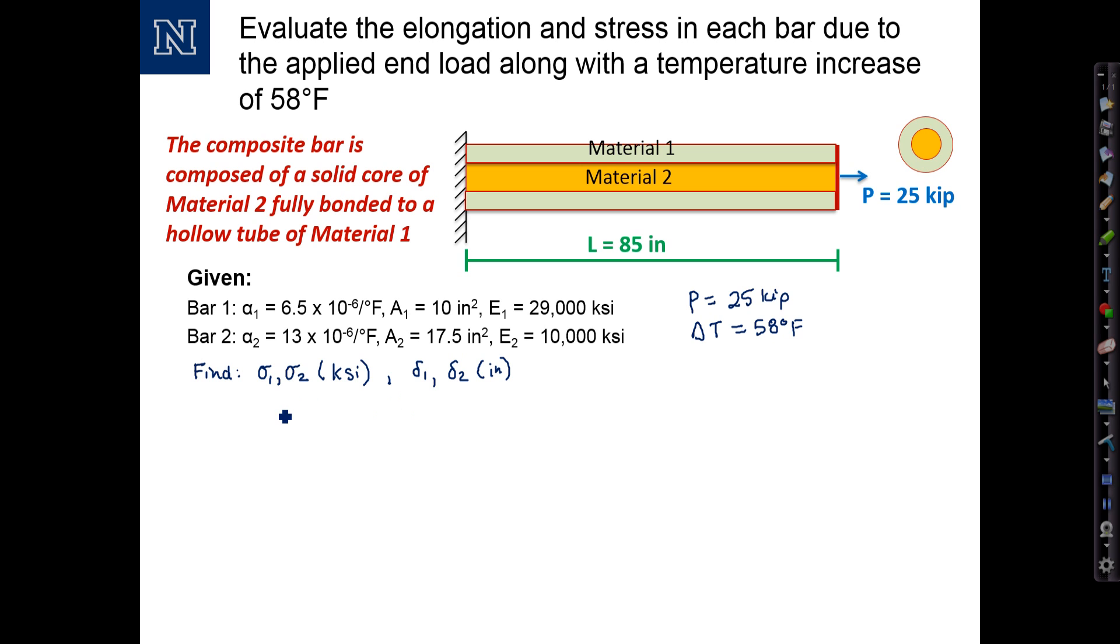We'll start out with considerations of equilibrium by drawing a free body diagram. I'm going to go ahead and make a cut through my bar somewhere in the middle and draw a free body diagram of this end of the bar. So what I have is just showing a little piece of the bar. Here's material 2, surrounded by material 1. At the end, I have my applied load of 25 kips.